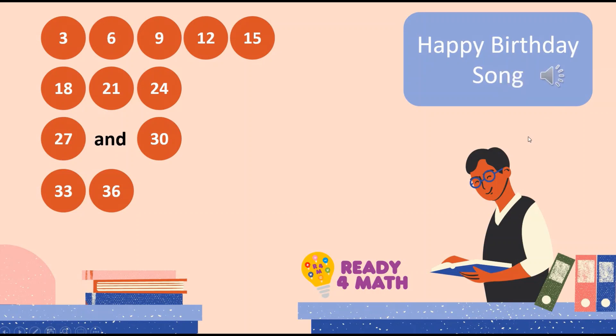Let's try to listen to the song again. Maybe you can sing together with the music: 3, 6, 9, 12, 15, 18, 21, 24, 27, and 30, 33, 36.